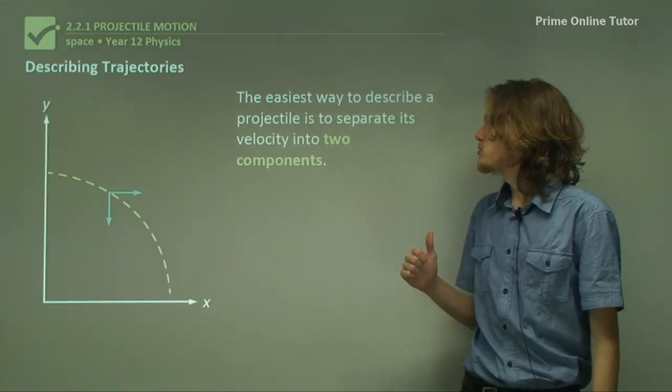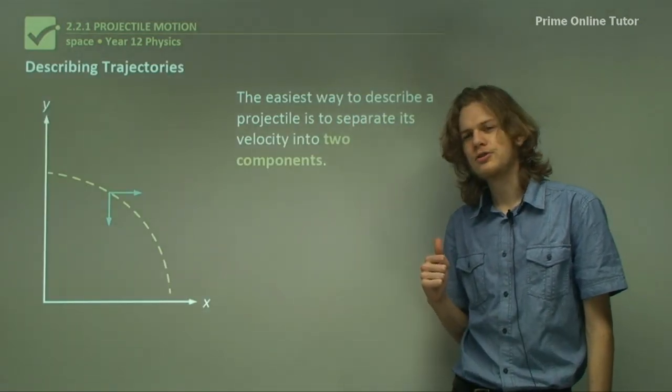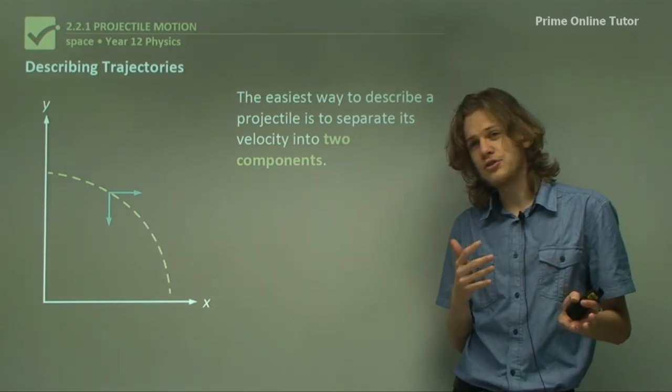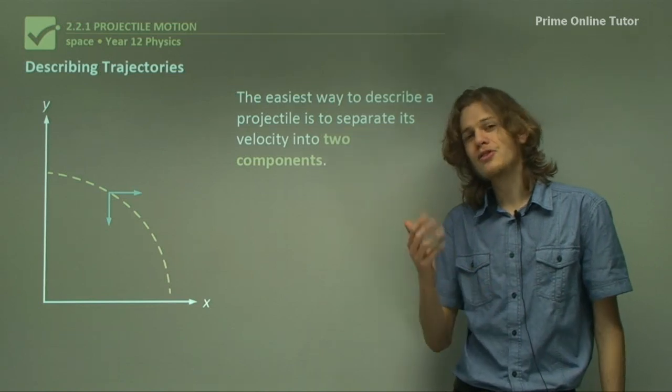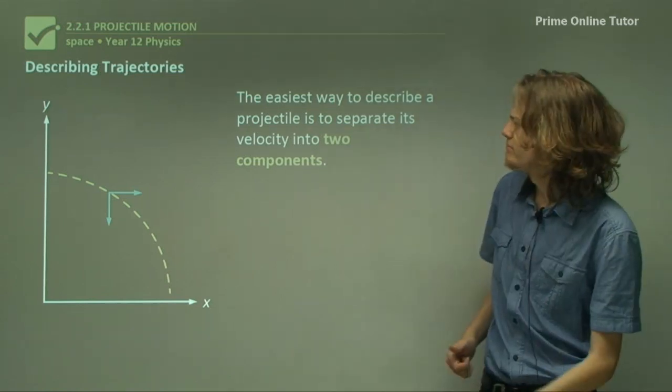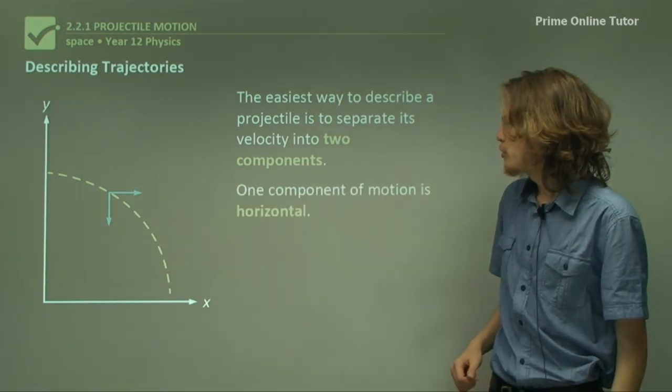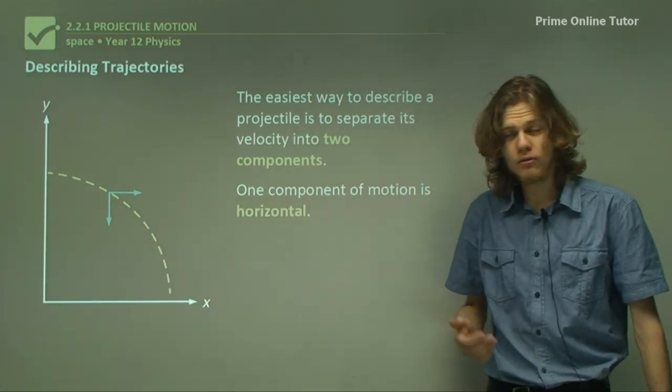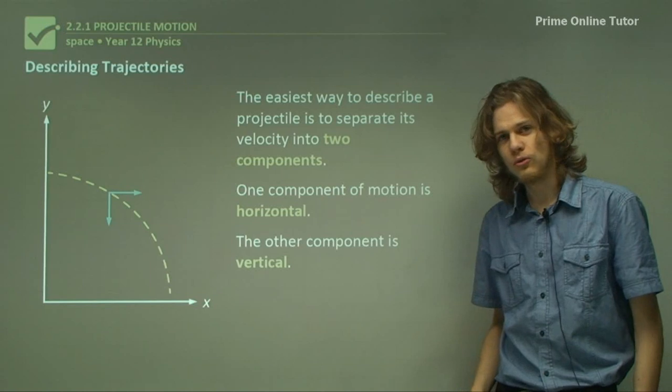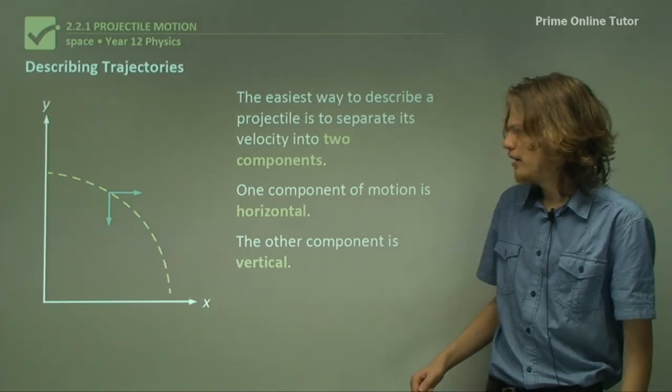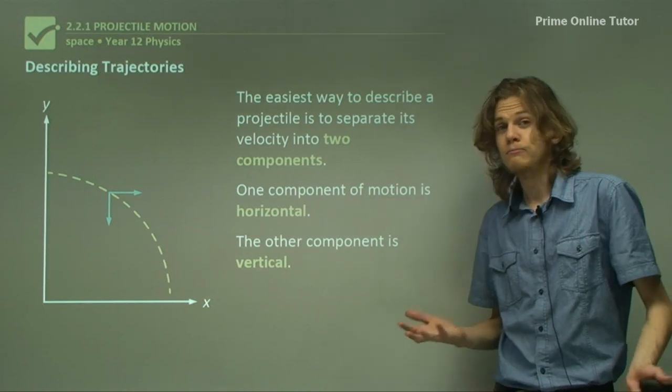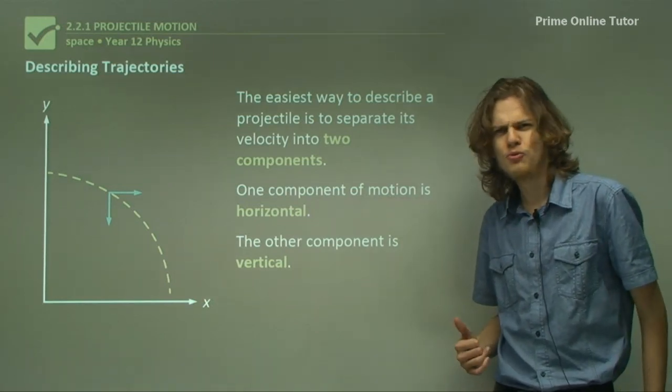The easiest way to describe a projectile is to separate its velocity into two different components. Because we're physicists and we're allowed to describe stuff mathematically, it's something that we're allowed to do. One component of motion will be horizontal, and the other will be vertical. How do these two components relate to the original velocity? Vector addition.